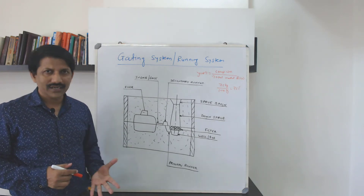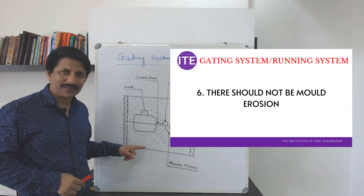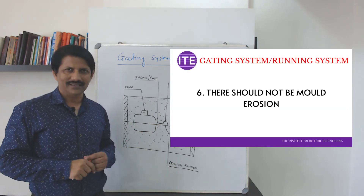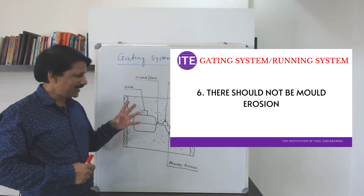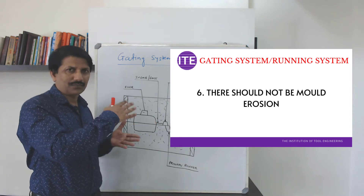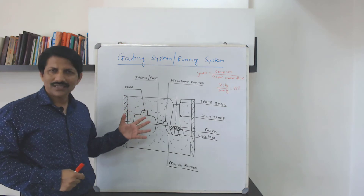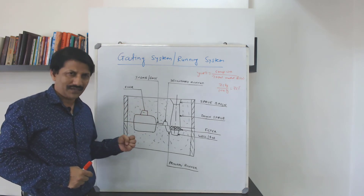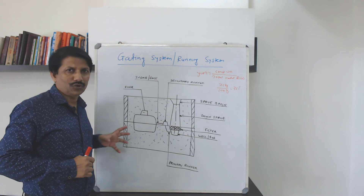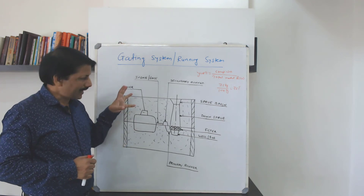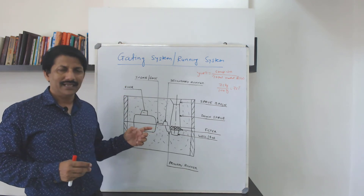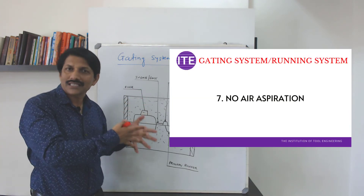The next consideration is that when filling takes place, there should not be any mold erosion. Mold erosion means if the mold is soft, or because of the pressure of the molten metal, there are chances of lumps being removed and those sand particles may flow along with the molten metal. One more requirement is that there should not be any air aspiration.